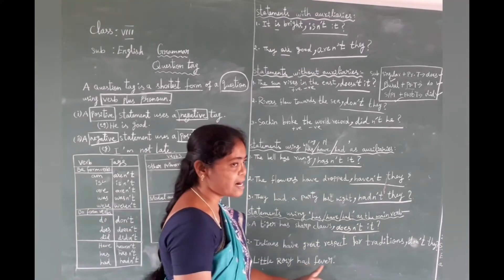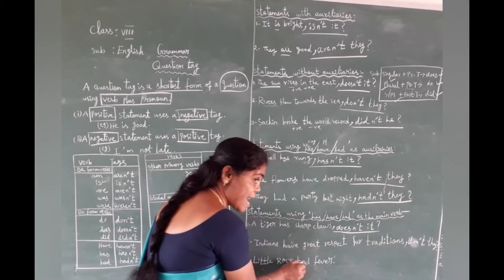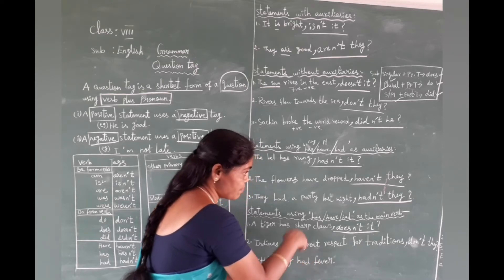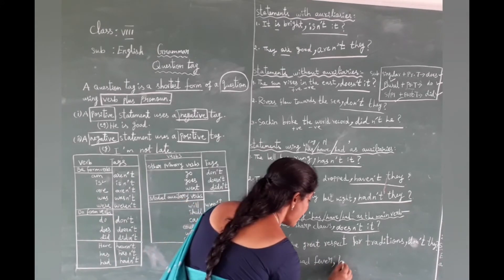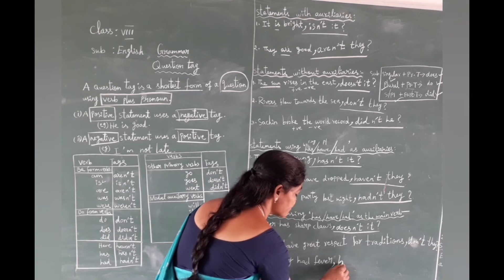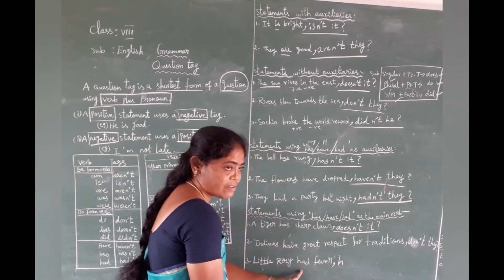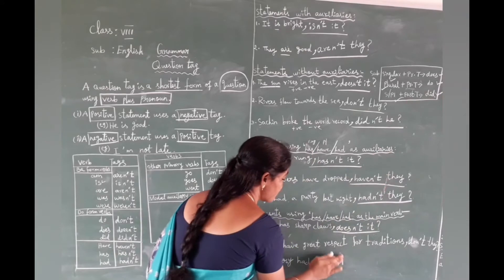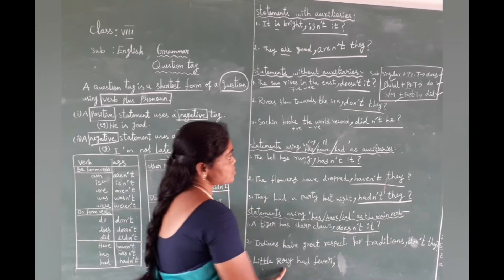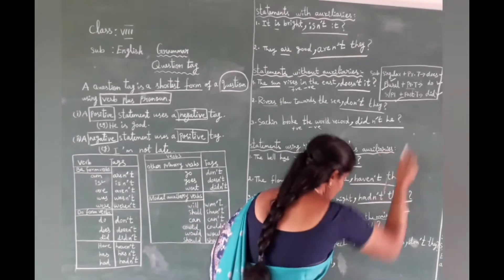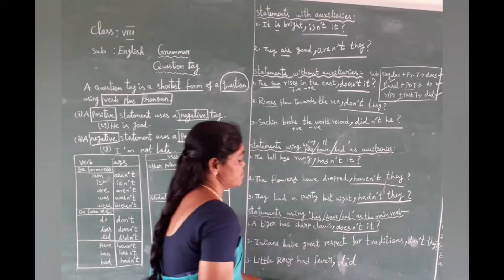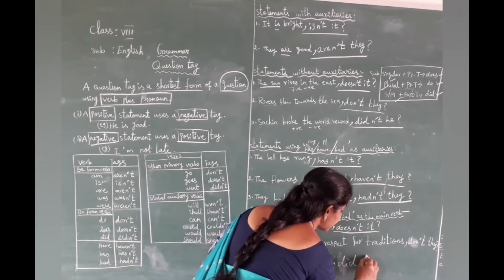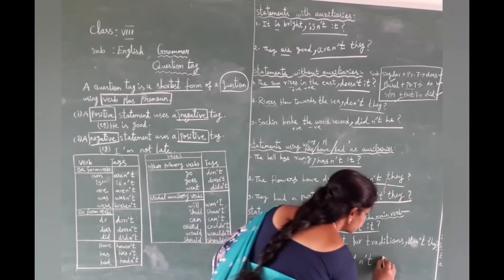Next: 'Little Rosy had fever.' Here 'had' plays as the main verb — there is no separate main verb. So we apply the without-auxiliary rule. The subject may be singular or plural: with past tense, we use 'did'. The given statement is positive, so the tag is negative: 'didn't she?' Remember: do not immediately write 'hadn't' — use 'didn't' because 'had' is acting as main verb.